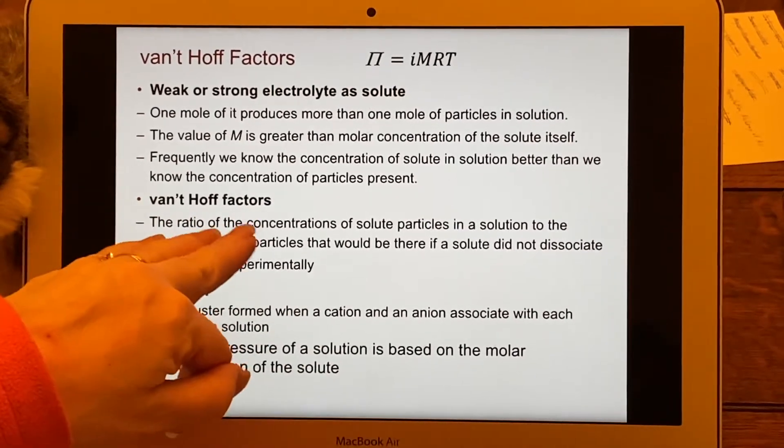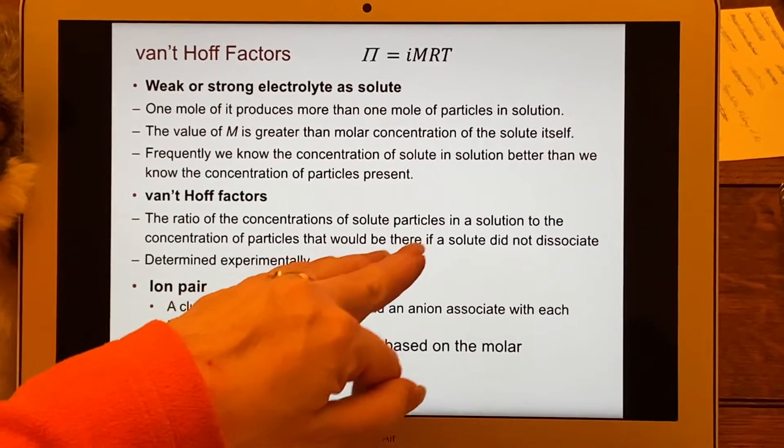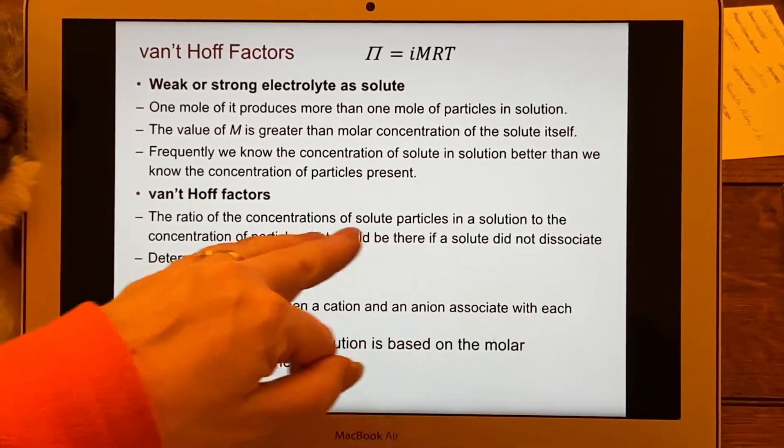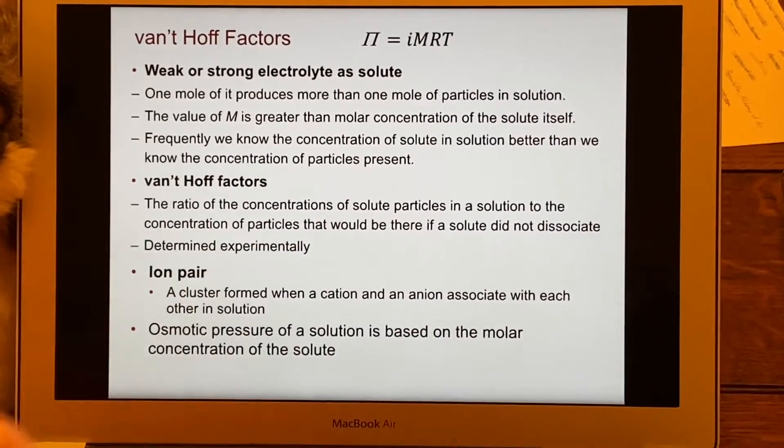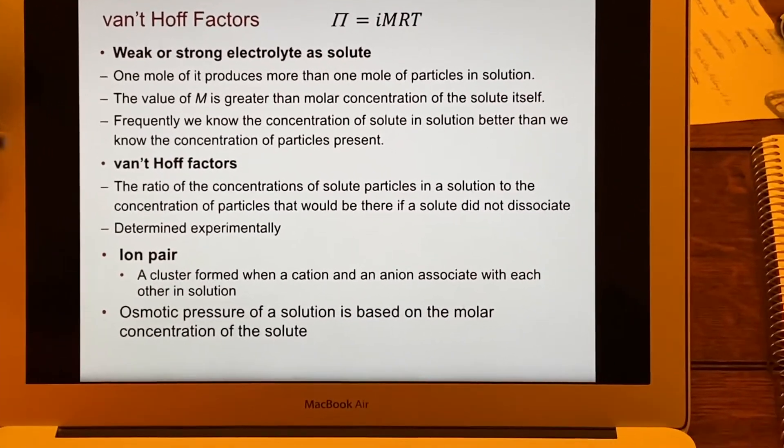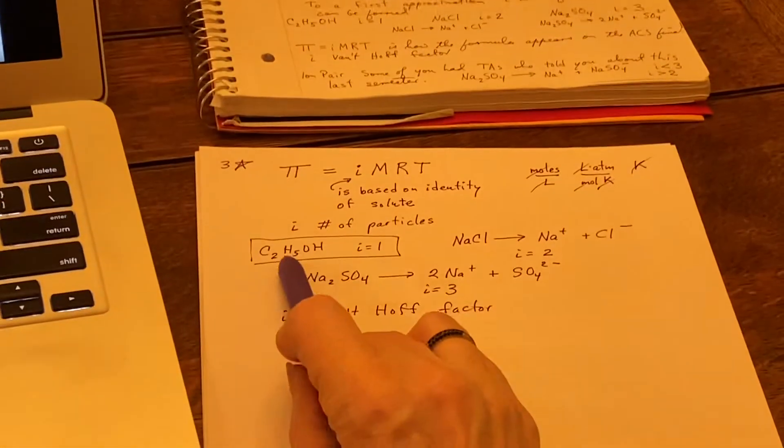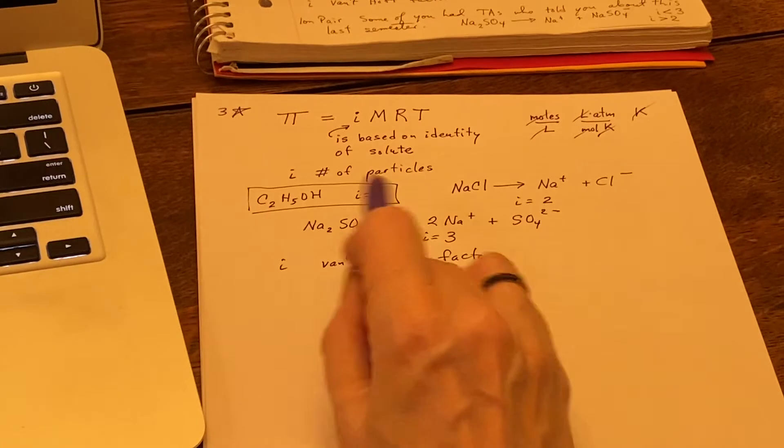So these van't Hoff factors come from a ratio of the particles in the solution to the particles that would be there if the solute did not fall apart, and that's why we have these, where i equals one if it just plain didn't fall apart. No change at all.